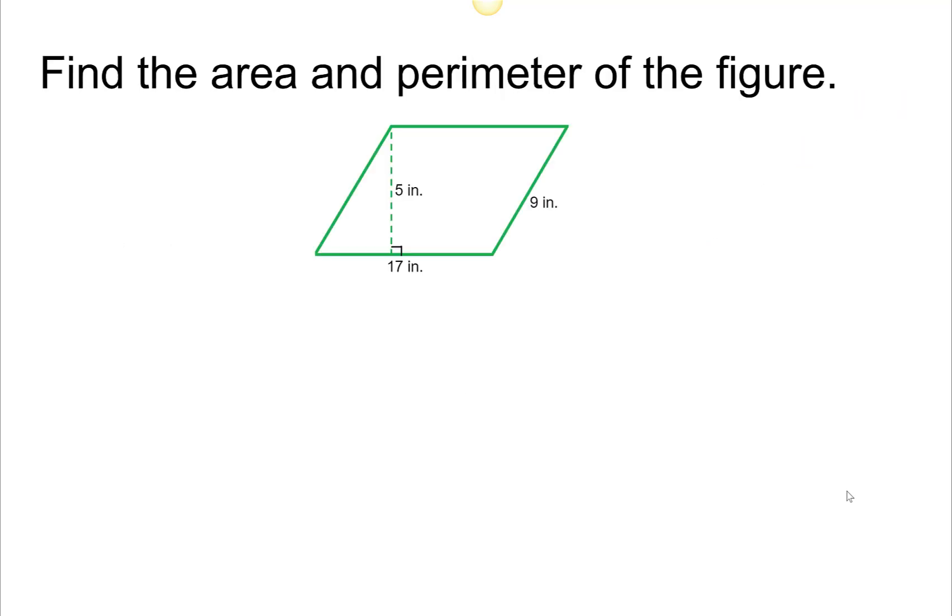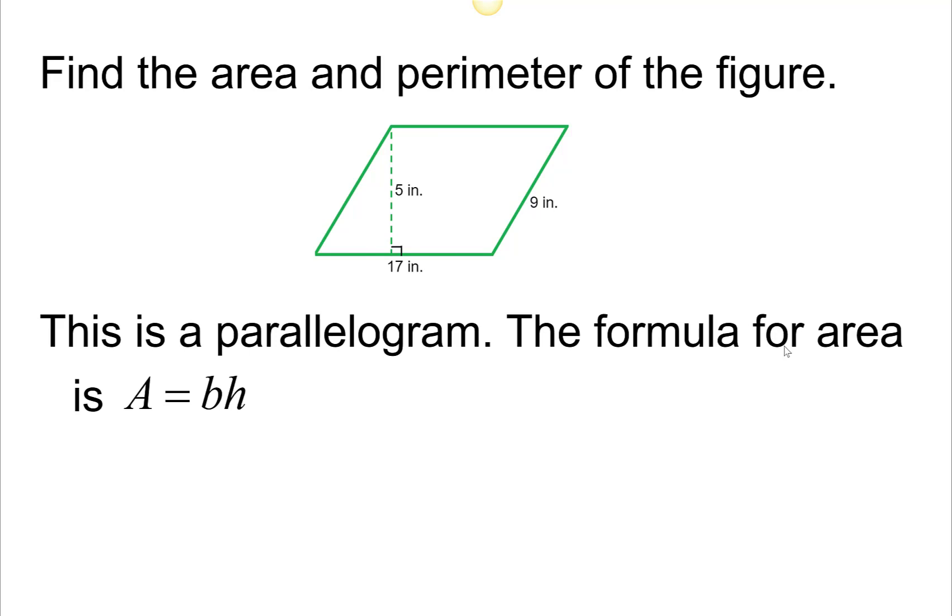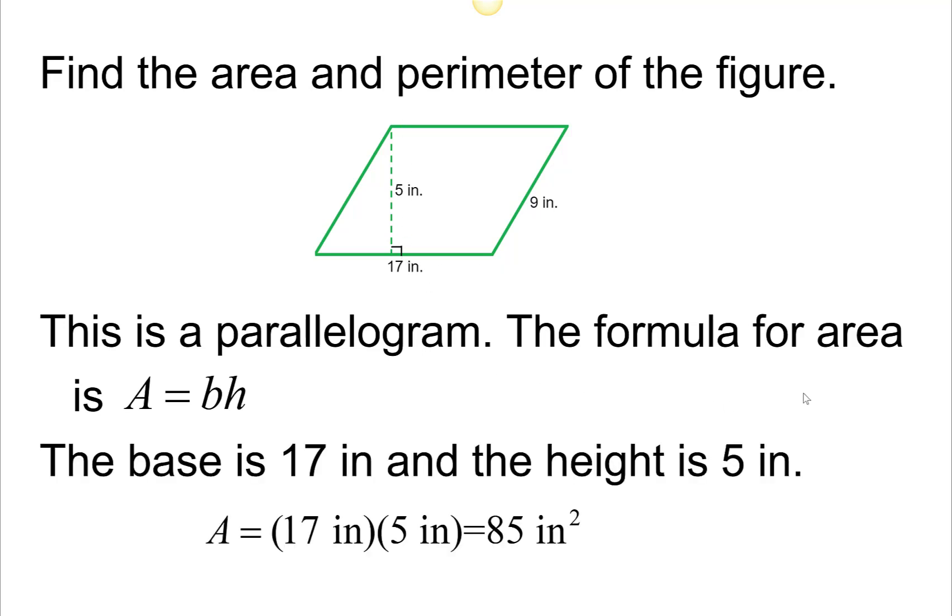Find the area and perimeter of this figure. Notice here, they show us the length of the sides and also the height, because this is a parallelogram. The formula for the area of a parallelogram is the base, which in this case is 17 inches, times the height, which is 5 inches. The area is going to be 85 square inches.